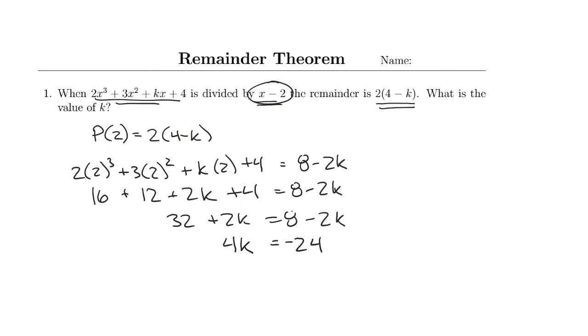Now I'm going to divide both sides by 4 to get my k, and I get that k equals -6. That's how this question would be approached.